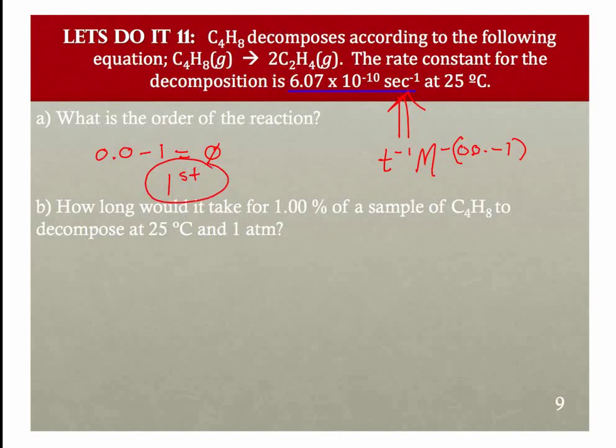So it's going to be natural log of C4H8 - this is minus Kt plus the natural log of my C4H8 at time 0, my initial. This is at some defined time t. Now be careful: this said that 1% decomposed. You want to be very careful to distinguish that from how much is remaining.